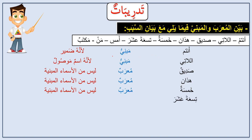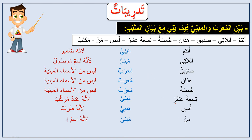Tis'ata 'ashara — mabni, because it's a 'adad murakkab, a compound number from eleven to nineteen constructed from two parts. Amsi — mabni, because it's a dharf (adverb of time); we say amsi, not amsu or amsa. Man — mabni, because it's an ism istifham — a question noun; and even if it's min (the preposition), it's still mabni because it's a particle. Maktab — mu'rab, because it's not from the asma' mabniyu; we say maktabun, maktaban, maktabin.